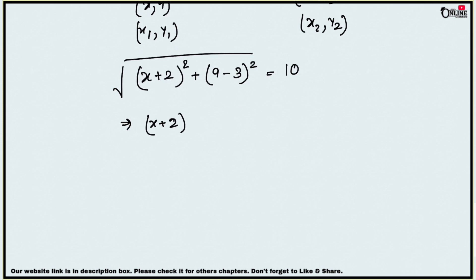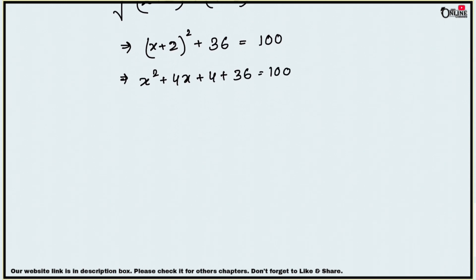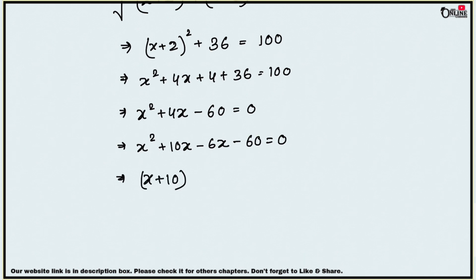Squaring both sides: (x + 2)² + 36 equals 100. Expanding: x² + 4x + 4 + 36 equals 100, so x² + 4x + 40 minus 100 equals 0, giving x² + 4x minus 60 equals 0. Factorizing by middle term: x² + 10x minus 6x minus 60 equals 0, so (x + 10)(x − 6) equals 0. Therefore x equals minus 10 or x equals 6.